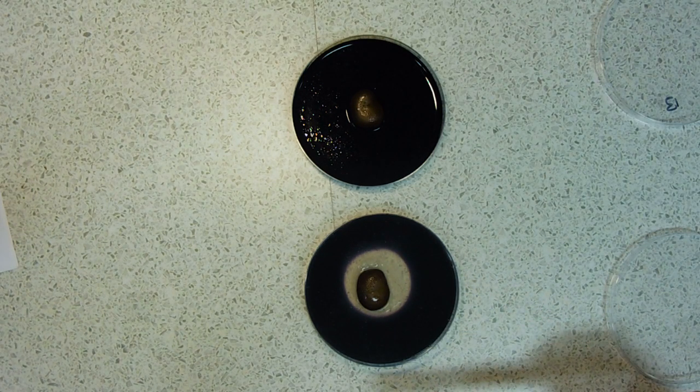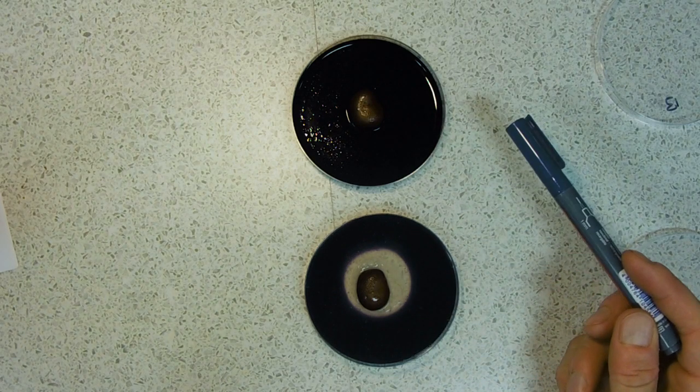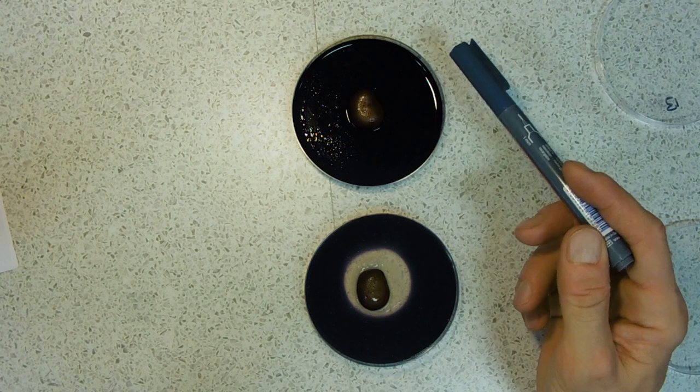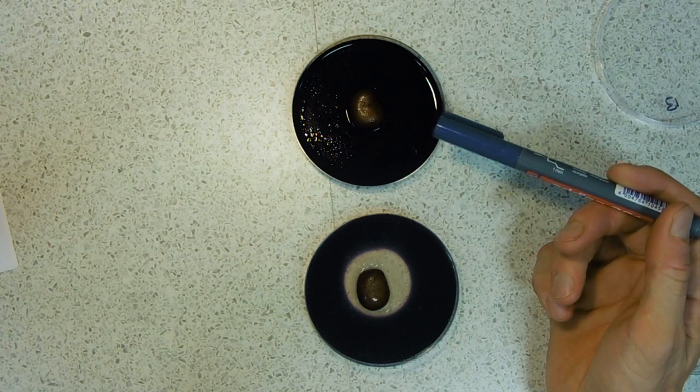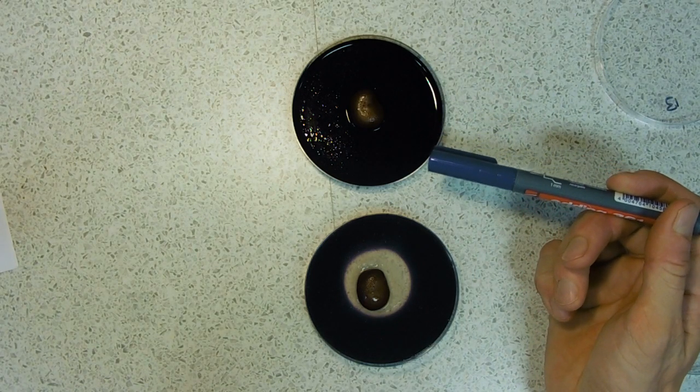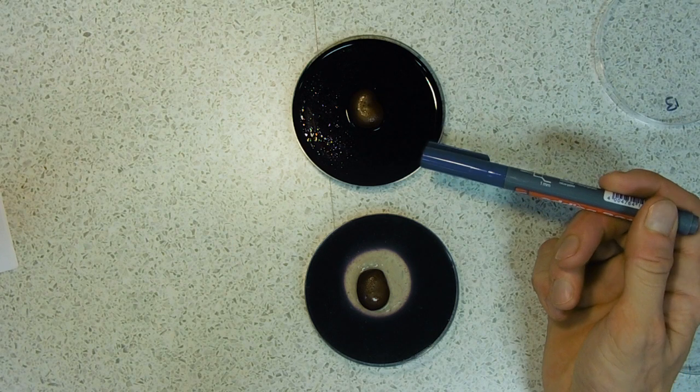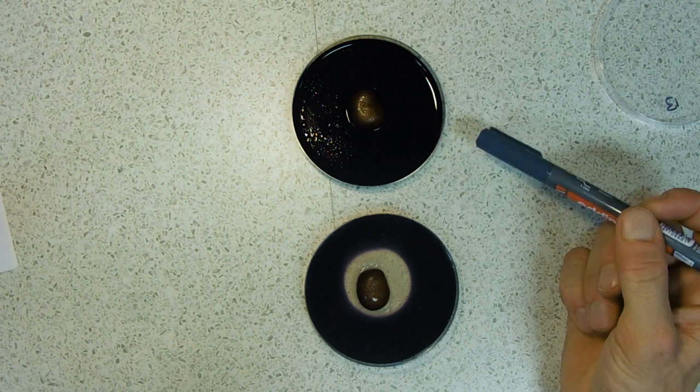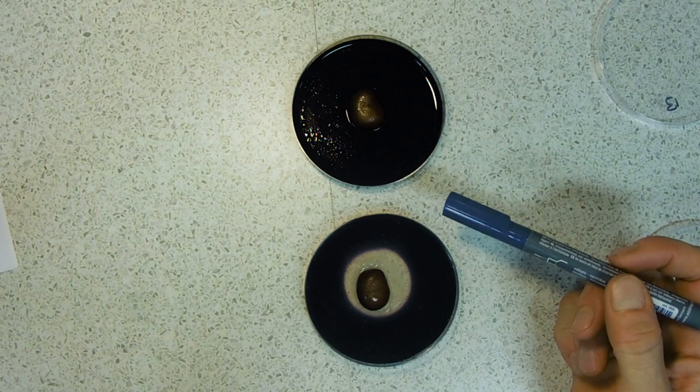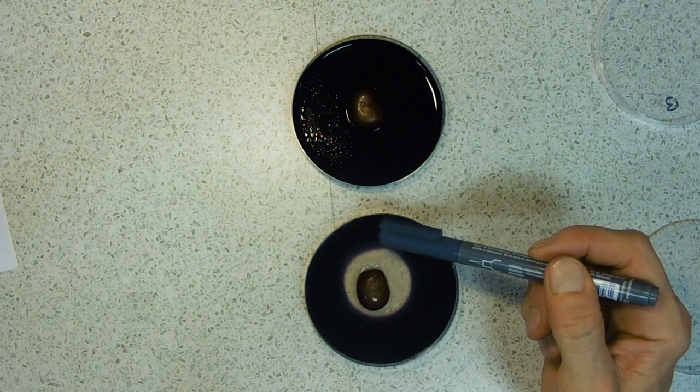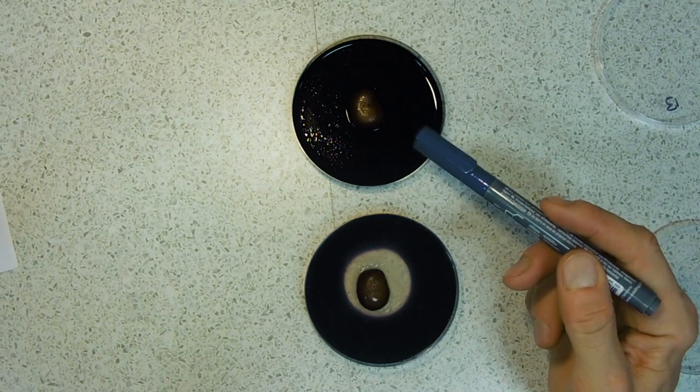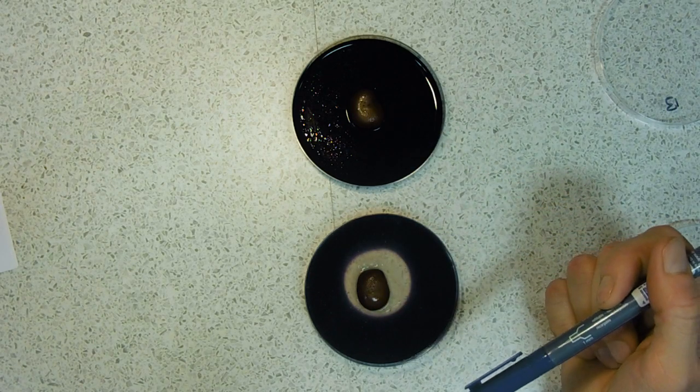This plate has been set up using agar, the sort you grow bacteria in, essentially jelly. The good thing about this agar is that you can mix it with water and add chemicals to it. We've added starch, so we've got a jelly made of starch, and we've managed to put a bean in there as well.